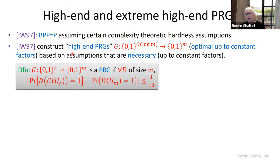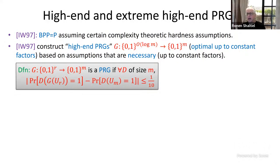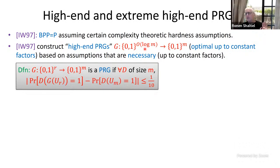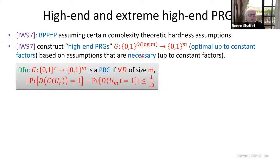What Impagliazzo and Wigderson did is construct these pseudo-random generators, which I call high-end. They are optimal up to constant — the seed length is order of log M. The best you can hope for is 1 times log M. And they use assumptions which are necessary at least up to constant factors — they are implied from such pseudo-random generators at least up to constant factors.